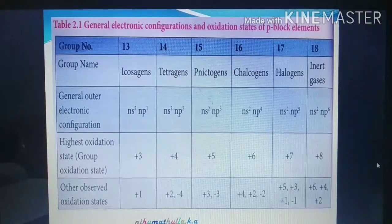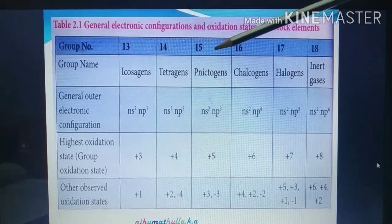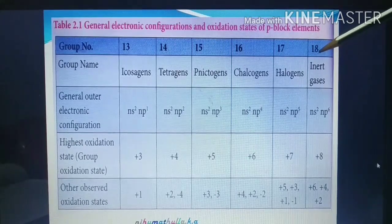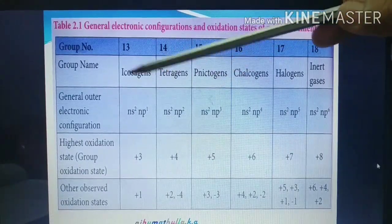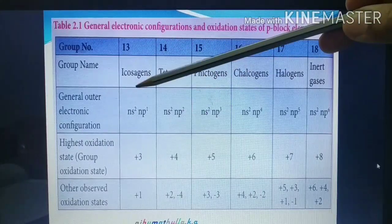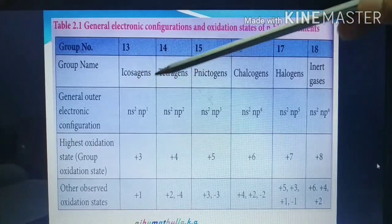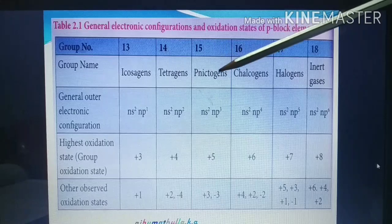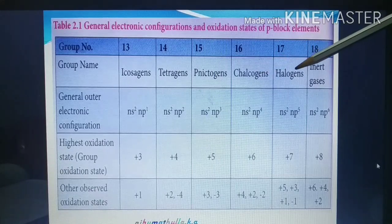A complete view of the electronic configuration and oxidation state of P-Block elements: Group 13 is the boron group, 14th is the carbon group, 15th is the nitrogen group, 16th is the oxygen group, 17th is halogens, and 18th is noble gases — also called inert gases or rare gases. The oxygen group element is also called chalcogens.